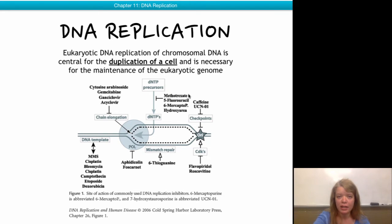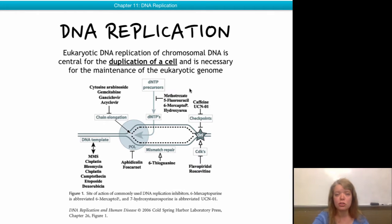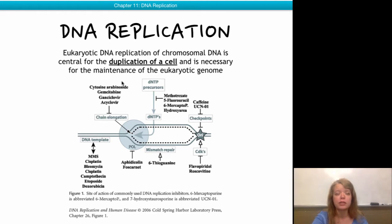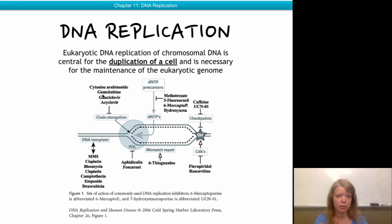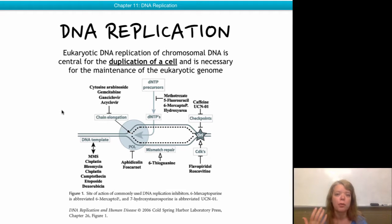For example, fluorouracil as well as methotrexate are among the oldest anti-cancer treatments available. These drugs block the production of dNTPs, specifically thymidine. Thymidine is only used in DNA and never in RNA, so it's only produced in great quantities when DNA is about to be replicated. The various drugs designed against the polymerases are one of the many antiviral treatments used, because many DNA viruses have very particular DNA polymerases that are significantly different from eukaryotic DNA polymerases. A drug can be designed to inhibit the viral DNA polymerase without affecting the eukaryotic one — so acyclovir, gemcitabine, ganciclovir — all these antiviral drugs are targeting polymerases.